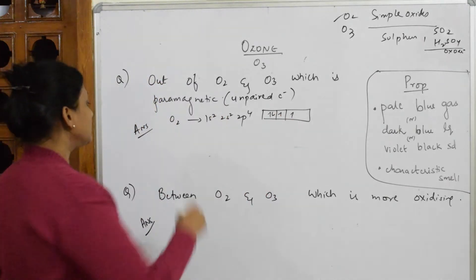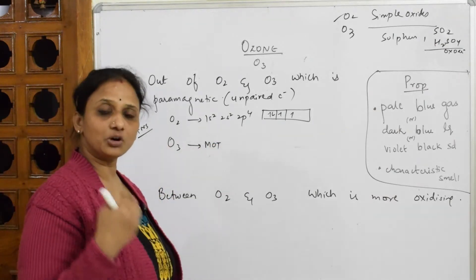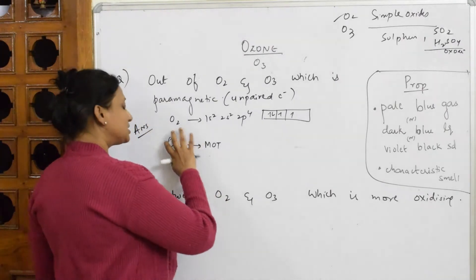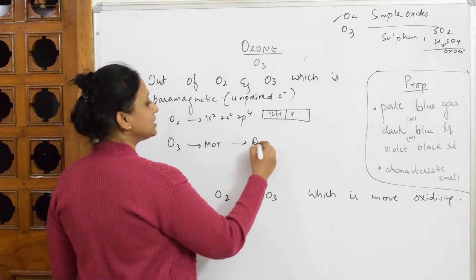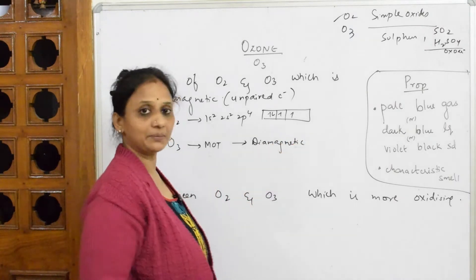But according to MOT theory, I'm not showing it as I said. According to MOT theory, where we draw the bonding molecular orbital and non-bonding, anti-bonding molecular orbital, it is observed that ozone is diamagnetic in nature. When I calculate the value, it's called diamagnetic.